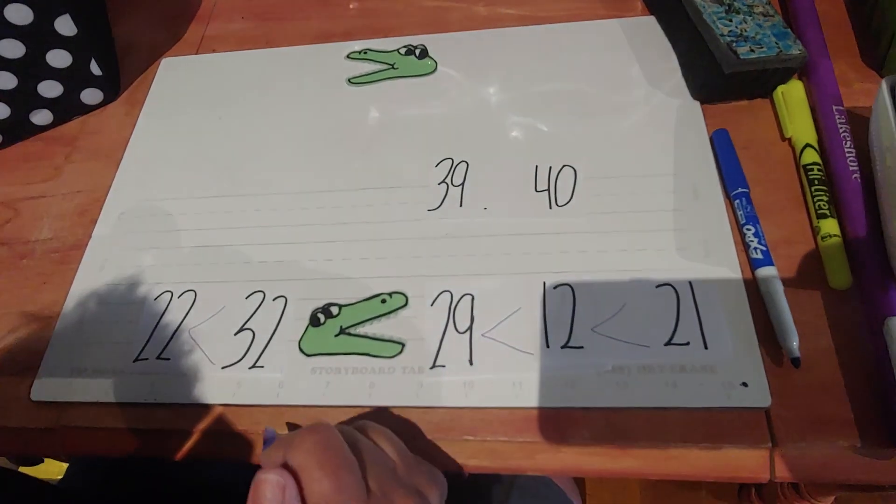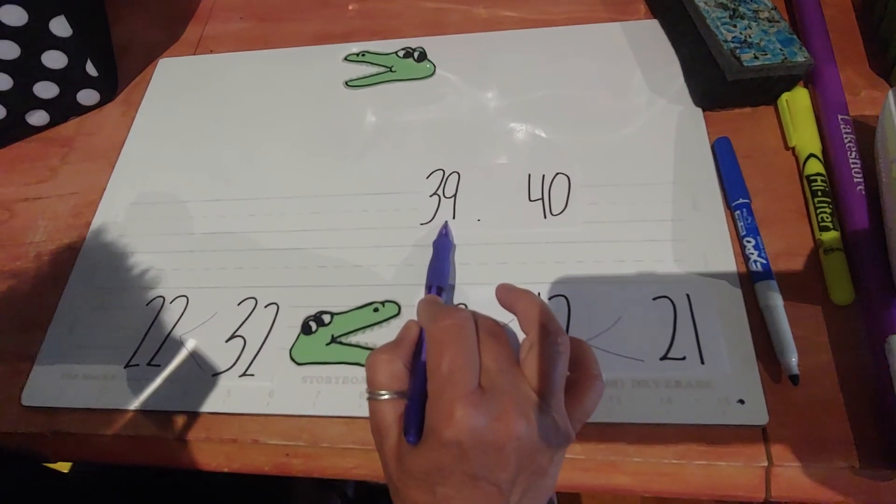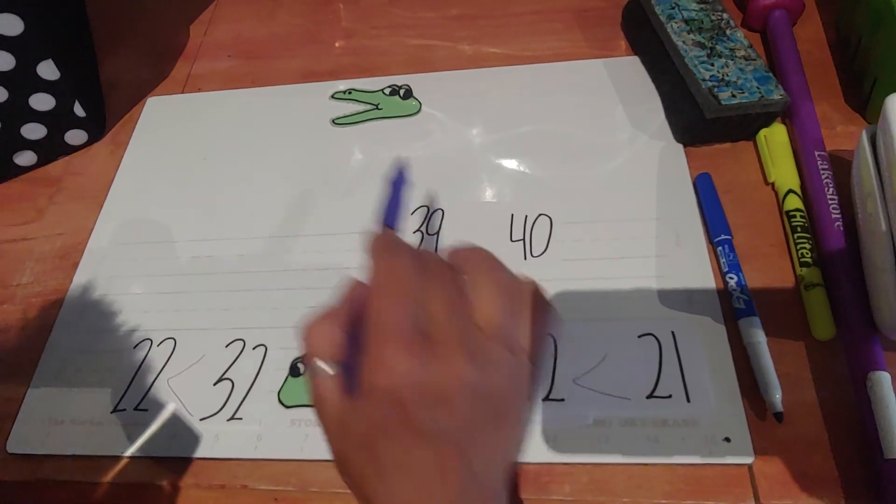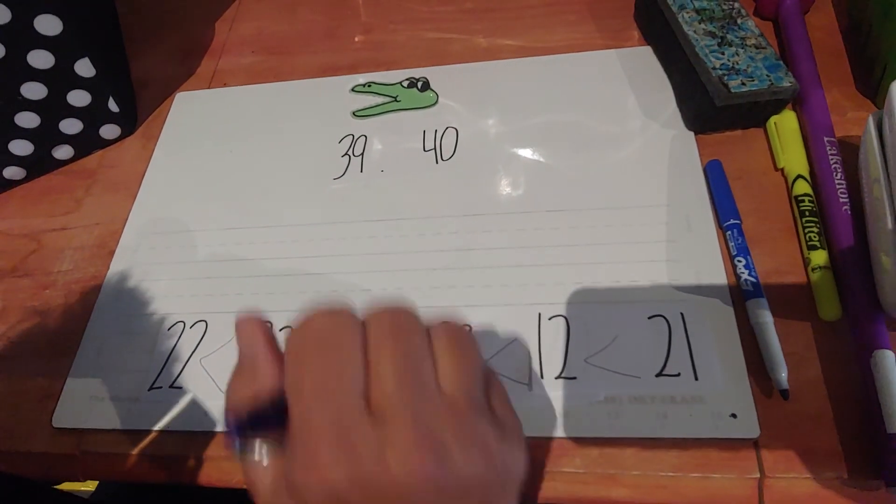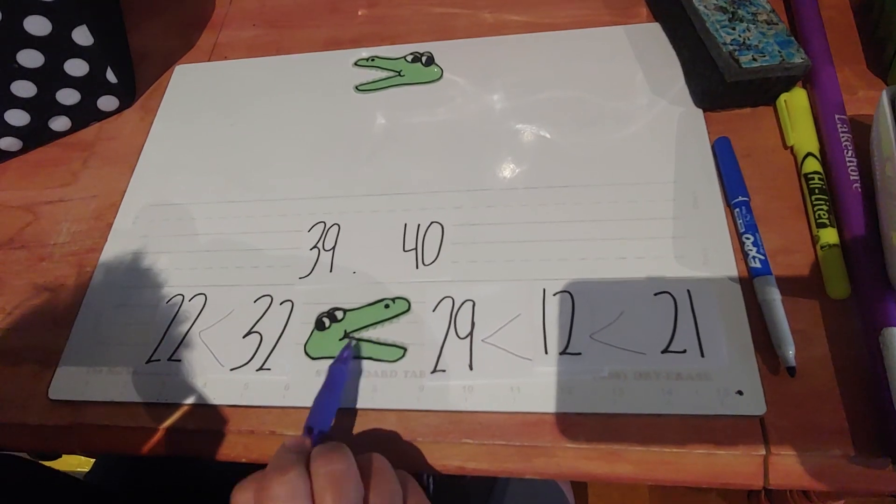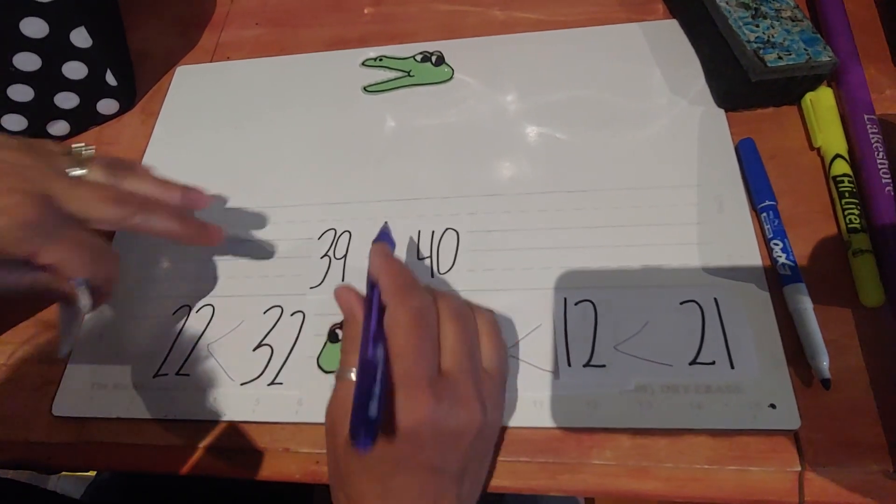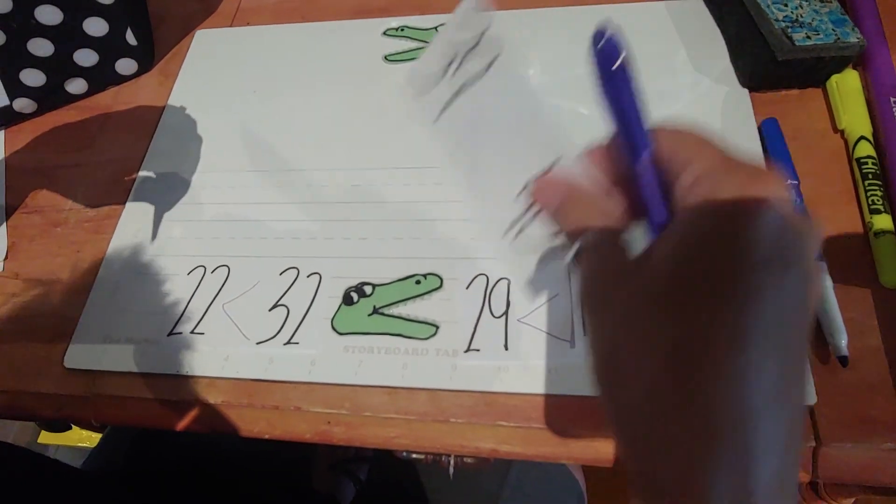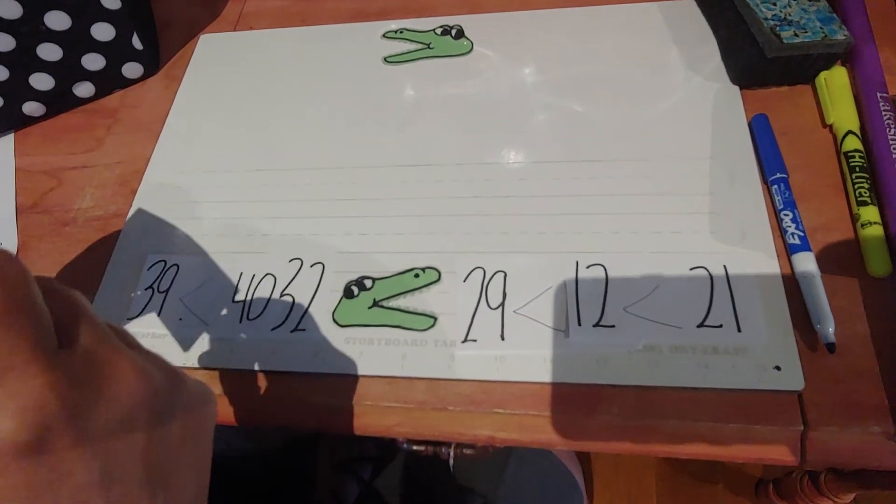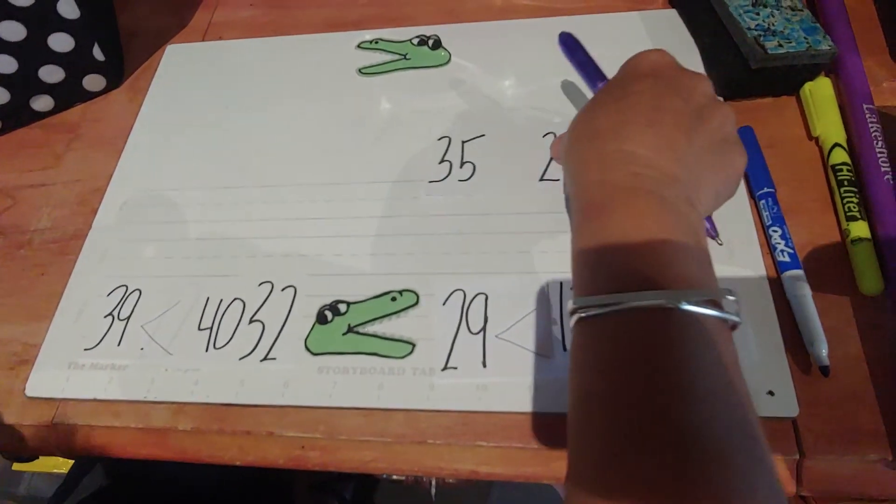What about this one? What is 39 to 40? Is 39 greater than 40? Or is 39 less than 40? Right, 39 is less than 40. Another one for this one. Boy, he's going to get full. What about this one?